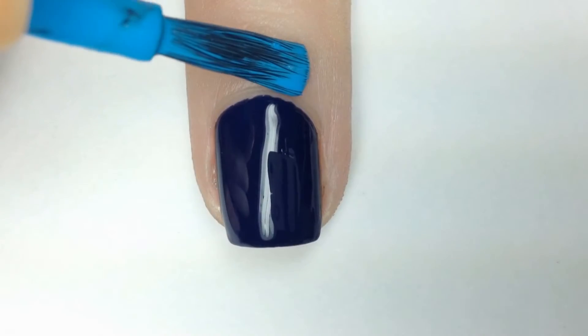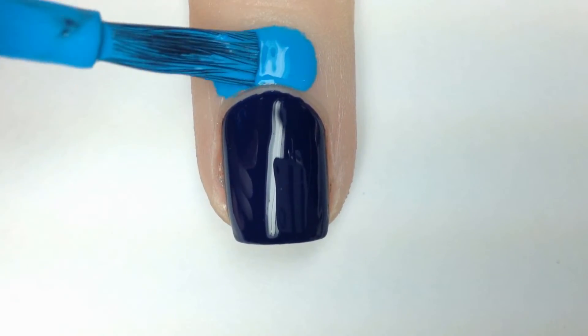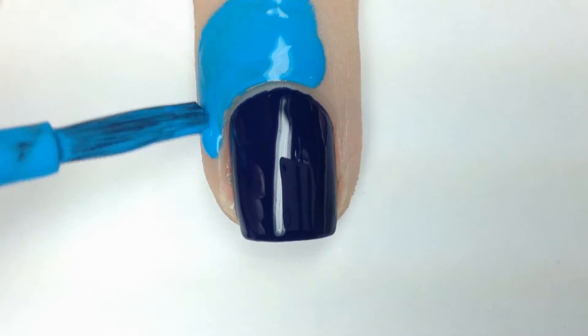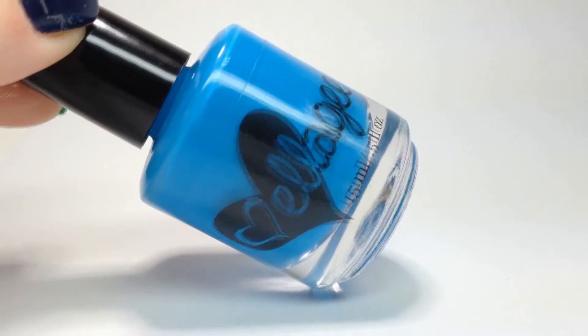Before I start any nail art I like to apply a liquid latex barrier around all of my nails to protect my cuticles and to make cleanup a lot easier later on. My favorite to use is Lickety Split by Elegy Polish.